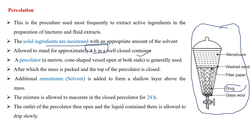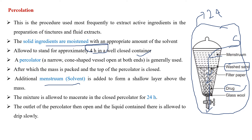The moistened drug is then added into the percolator. A filter paper or sand is placed above the drug, and then the suitable solvent (menstruum) is added on top. The entire percolator is kept aside for 24 hours. During this time, the menstruum moves through the crude drug, the desired components dissolve, and the extract comes out at the bottom. This is the percolation process, taking around 24 hours.